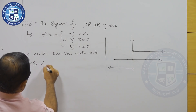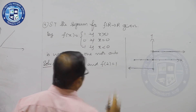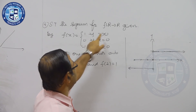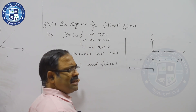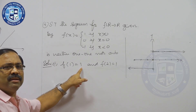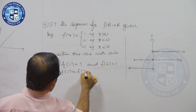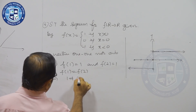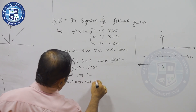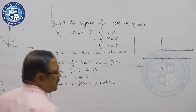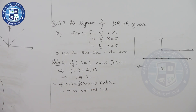Now, f(1) = 1 and f(2) = 1, since for all x > 0, f(x) = 1. This means f(1) = f(2), but 1 ≠ 2. That is, f(x₁) = f(x₂) does not imply x₁ = x₂. Therefore, f is not 1-to-1.